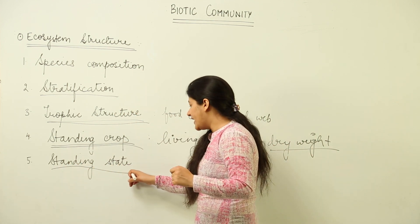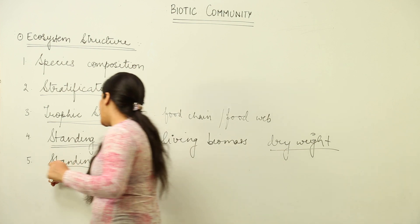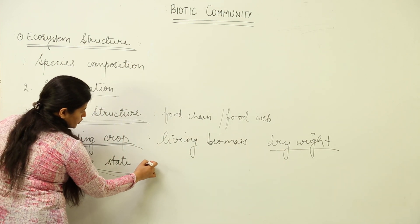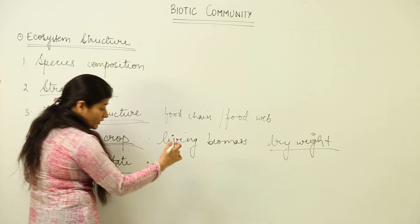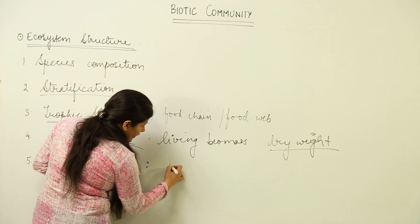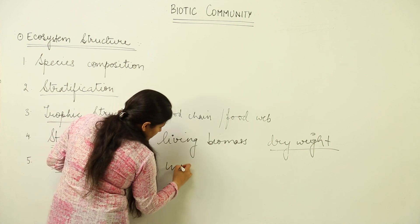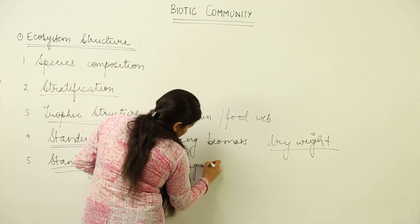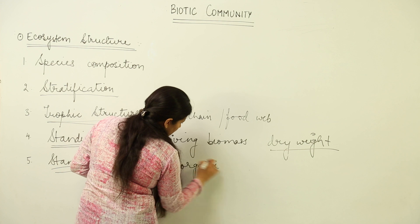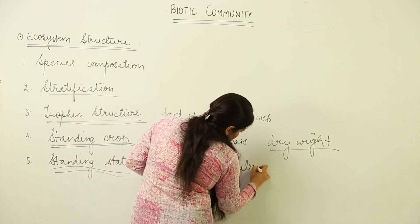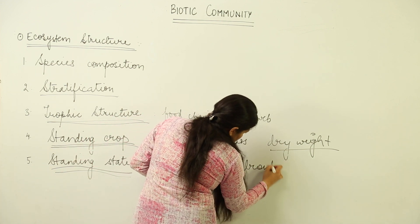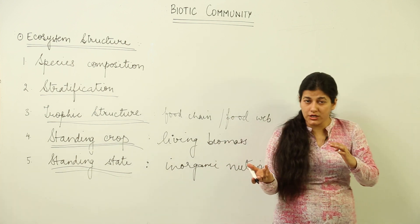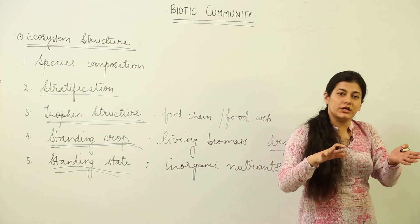The last structural component is the standing state. Standing state refers to the inorganic nutrients present in the soil or water of an ecosystem — whether terrestrial or aquatic. The amount of inorganic nutrients available in a given ecosystem is known as its standing state.